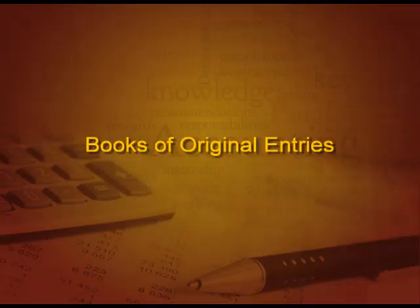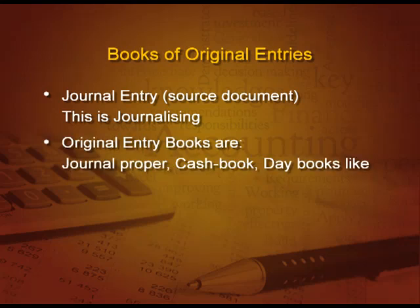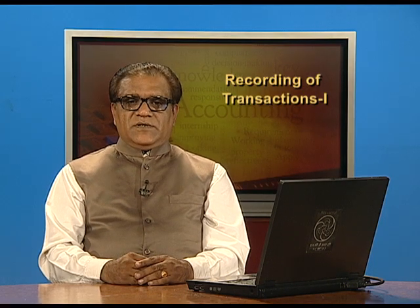Welcome students. We are now going to start with the second part of chapter three, that is books of original entries. The first journal entry is done through a source document, and this is called journalizing. The original entry books are journal proper, in which we record those transactions which are not very specific.